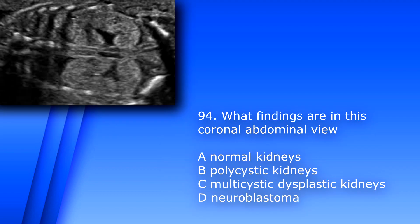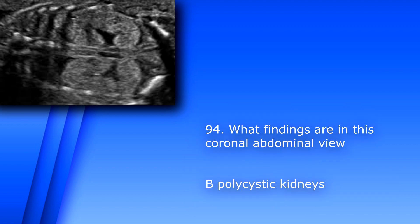Question 94. What findings are in this coronal abdominal view? A. Normal kidneys. B. Polycystic kidneys. C. Multicystic dysplastic kidneys. D. Neuroblastoma. The answer is most likely B, polycystic kidneys. They're enlarged, hyperechoic, and you can see tiny cysts.